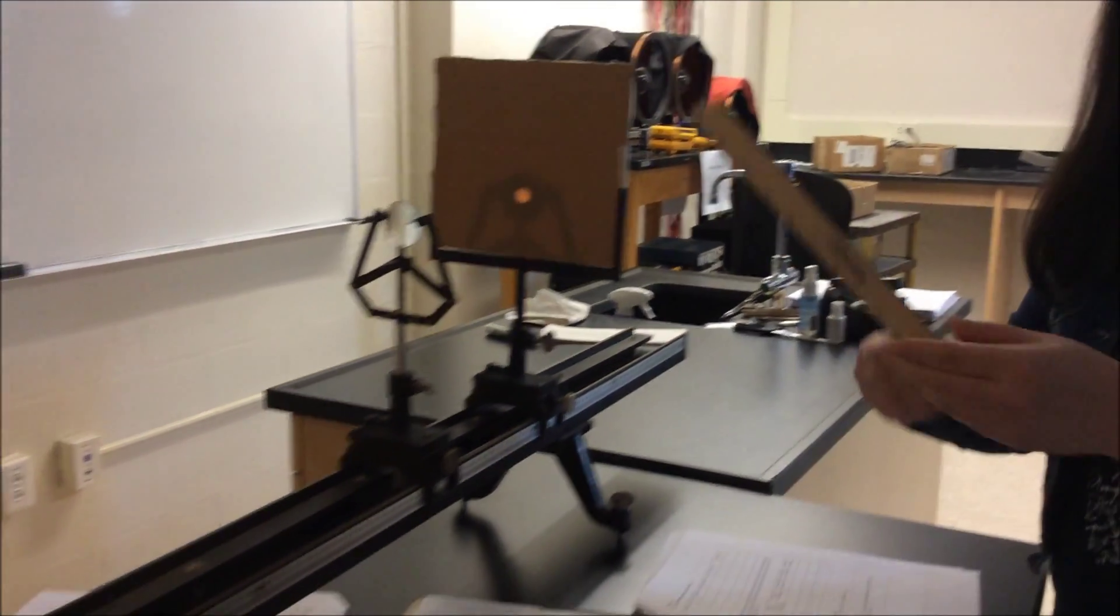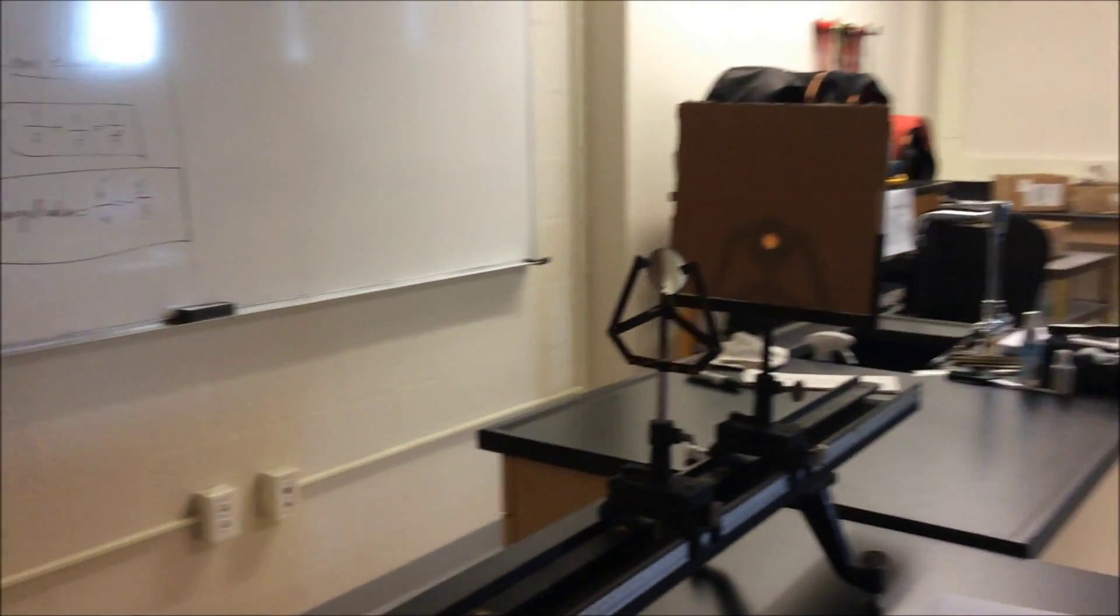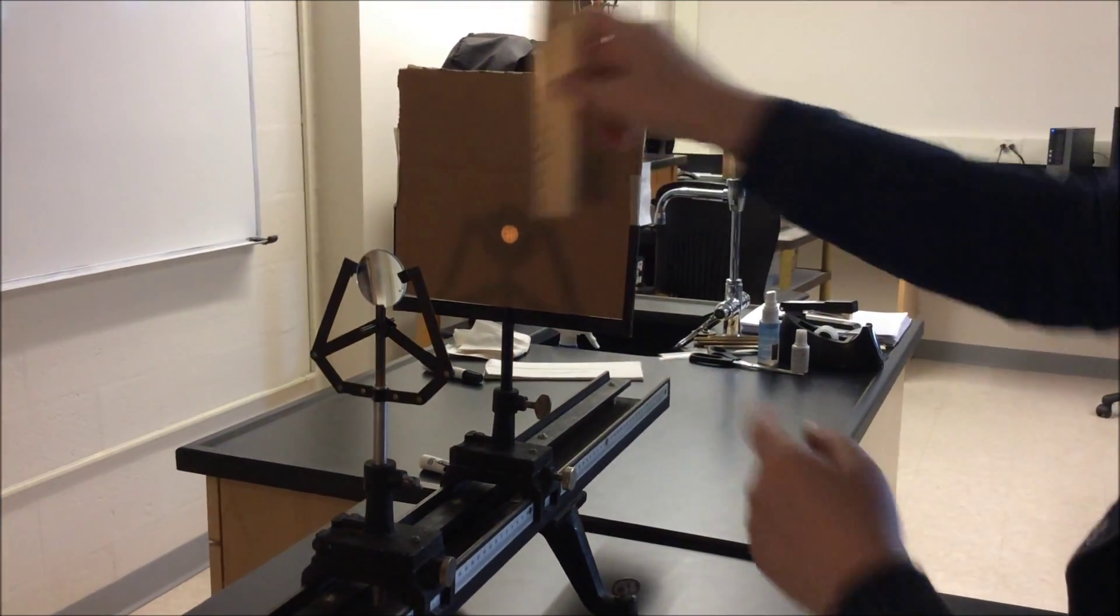Now to find the object size, you're going to take your ruler stick, and you're going to measure it like this, and to find the image size, you're going to take the ruler and measure the length of the arrow on the screen.